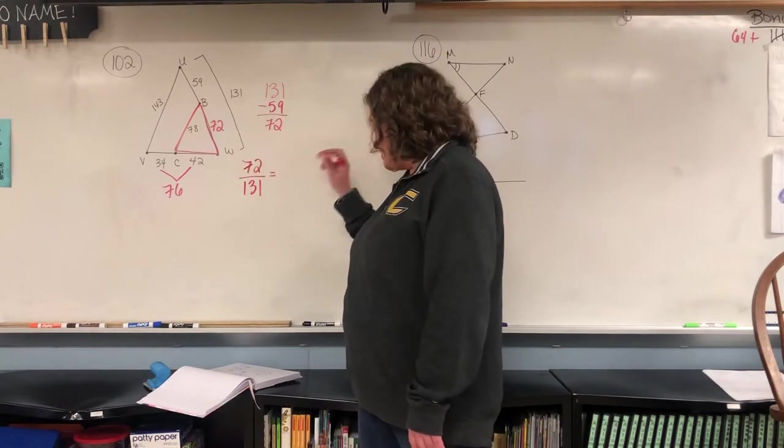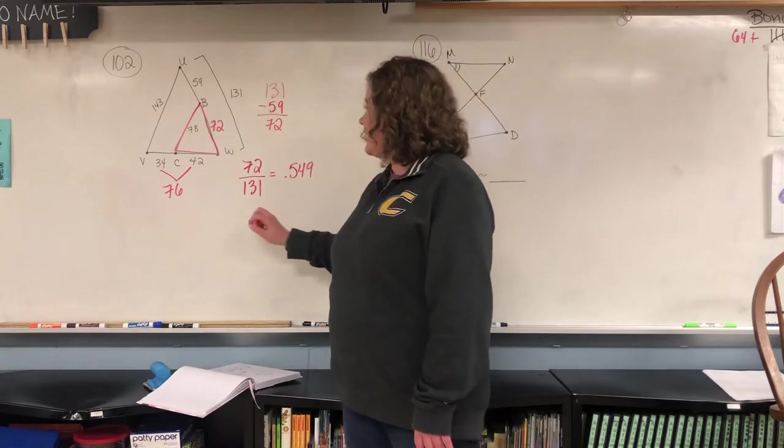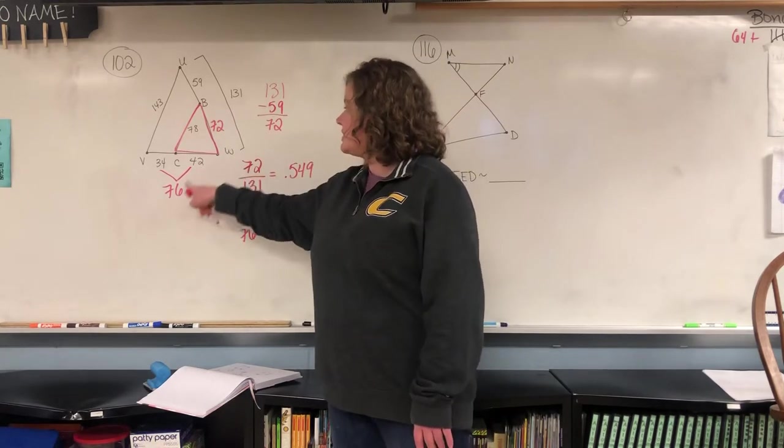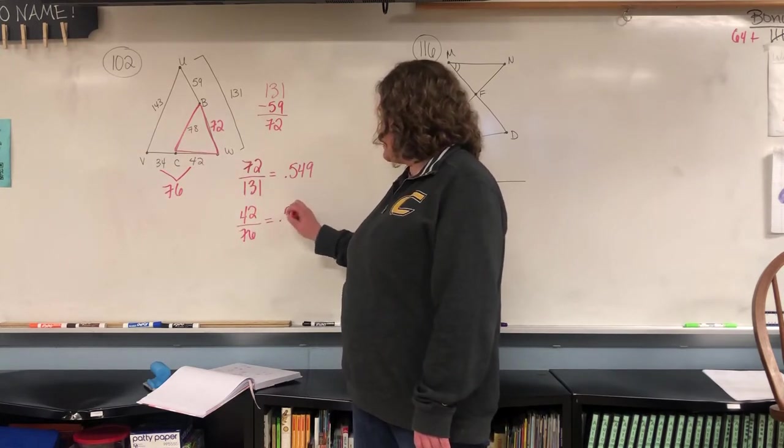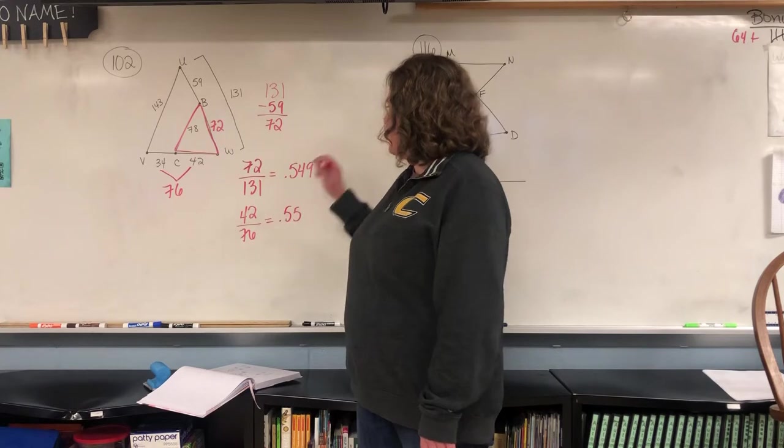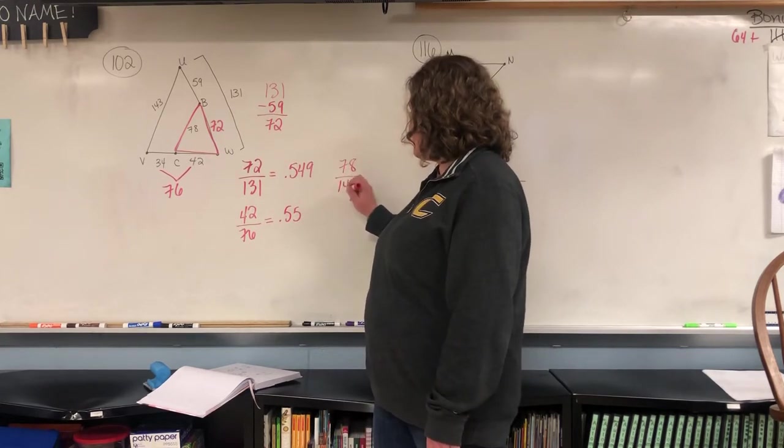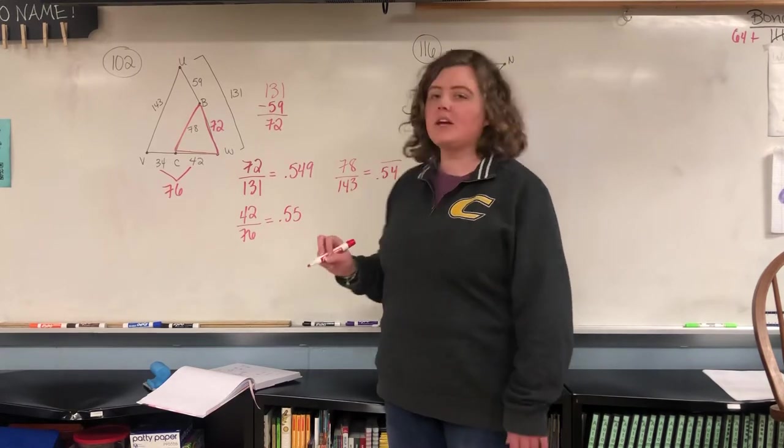And when you do that one, you get 0.549. And then if you do 42 right here with the 76 for the bottom, you end up getting 0.55, and then when you do 78 and 143, you end up getting 0.54 repeating.